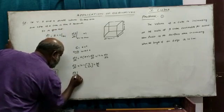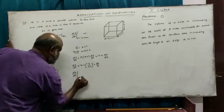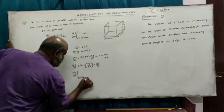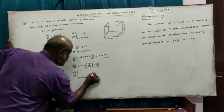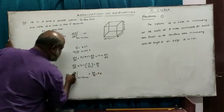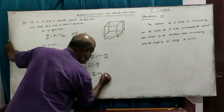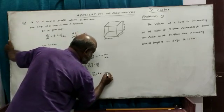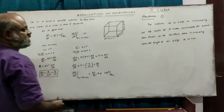When x is equal to 10 cm, dS/dt equals 36 divided by 10, that is 3.6 cm² per second. That is correct.